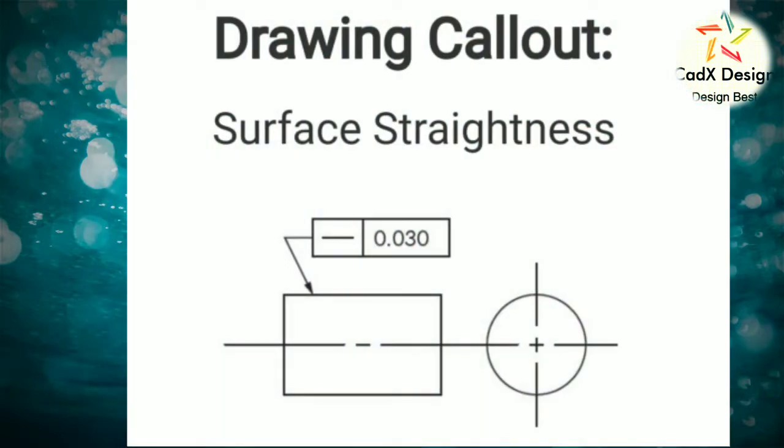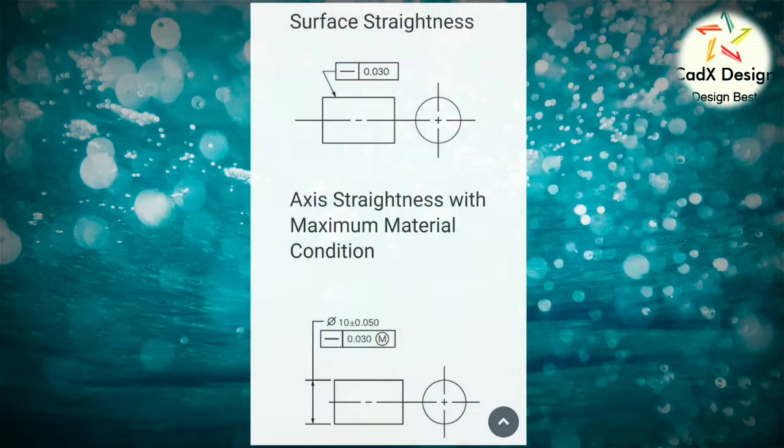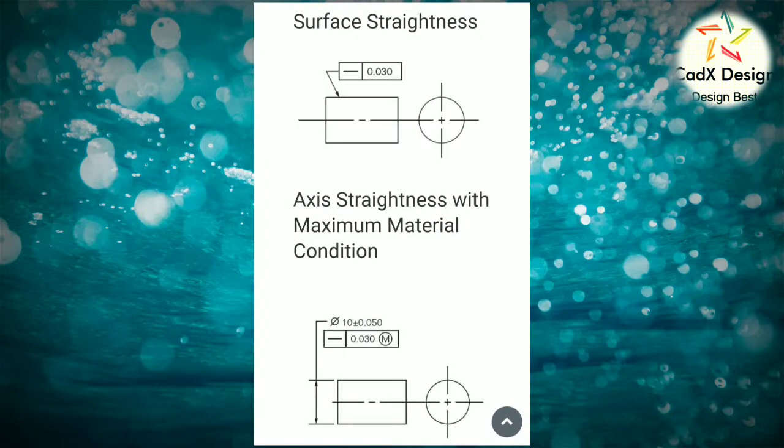In its normal form or surface straightness, it is a tolerance that controls the form of a line somewhere on the surface of the feature. Axis straightness is a tolerance that controls how much curve is allowed in the part's axis. This is usually called out with an included call to maximum material condition. Both callouts are very different from each other. See images for reference.